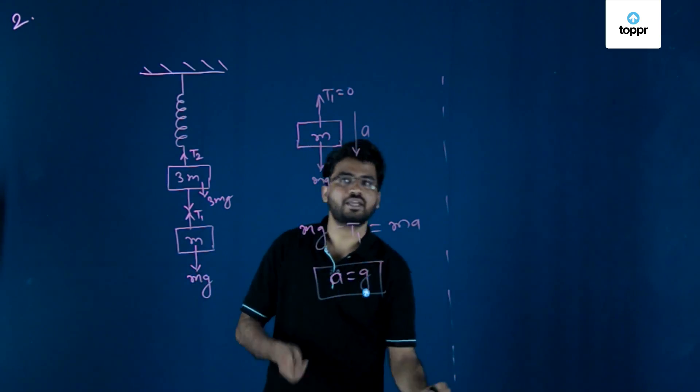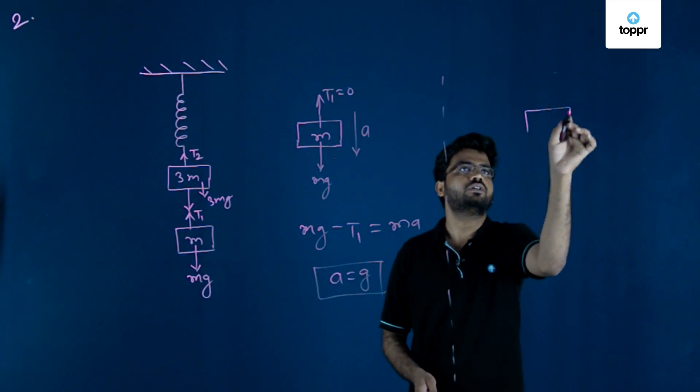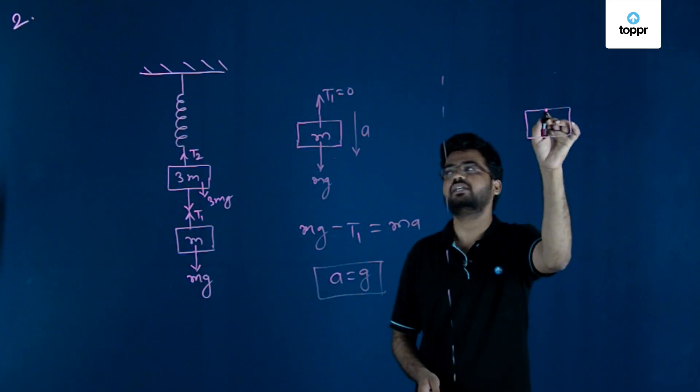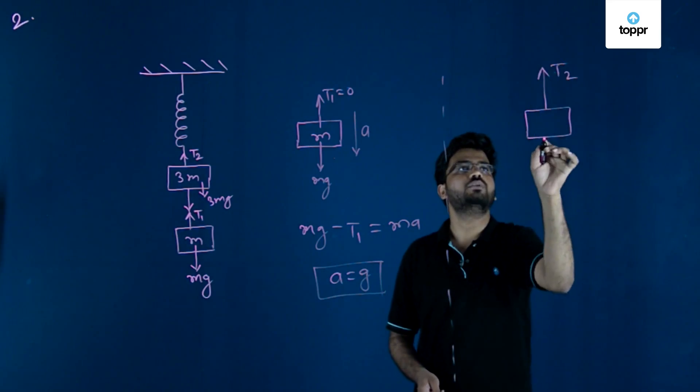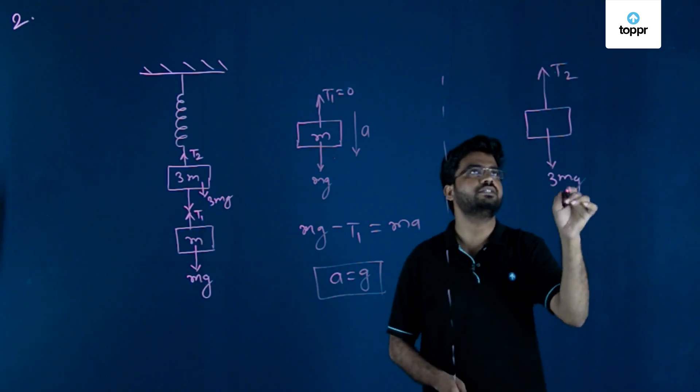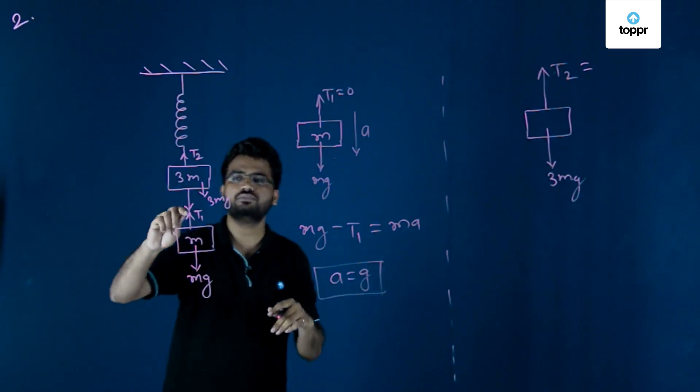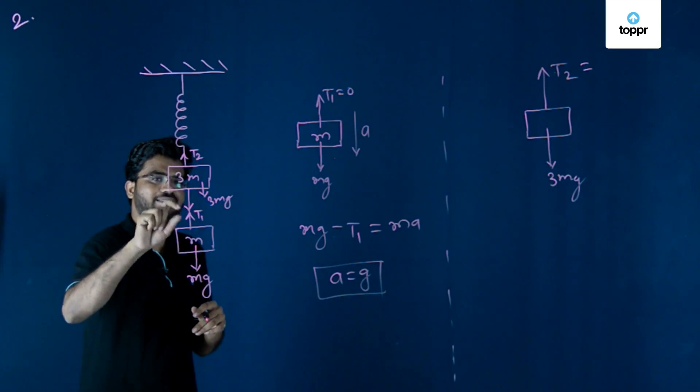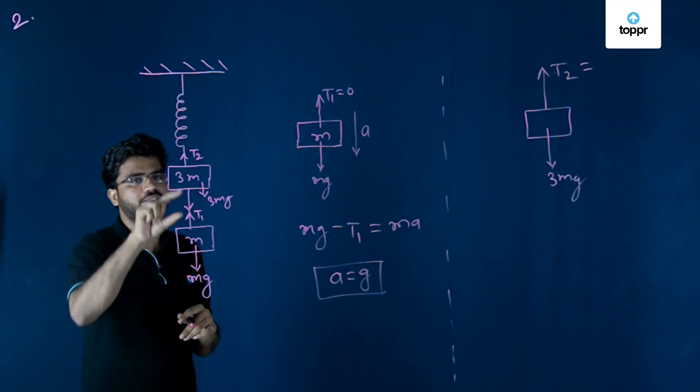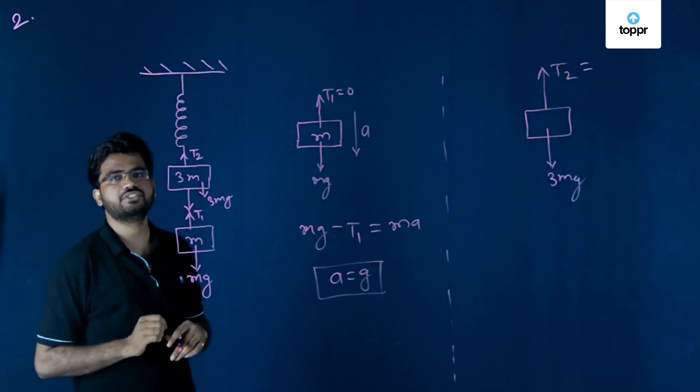Now for 3m, same free body diagram. It is T2 upward, then 3mg downward. T2 can be easily found out - when we have not cut the string between 3m and m, the tension T2 is given by (3m plus m) times g, that is 4mg.